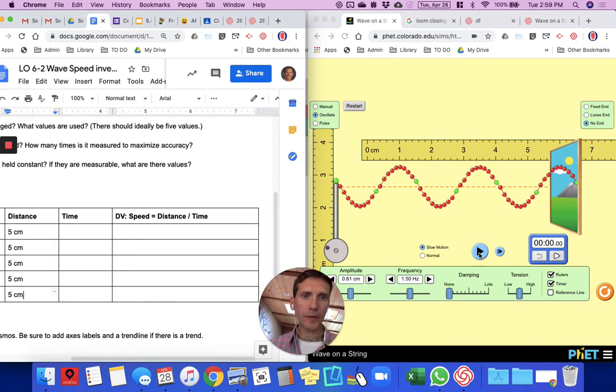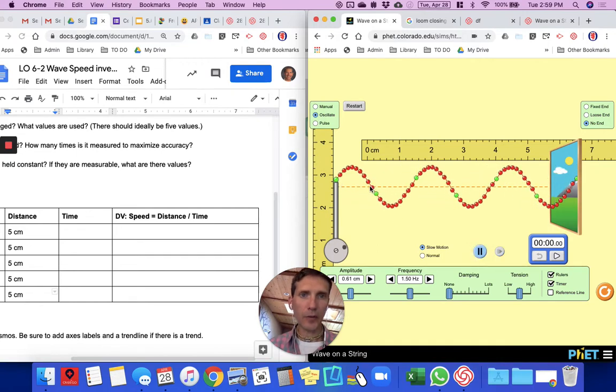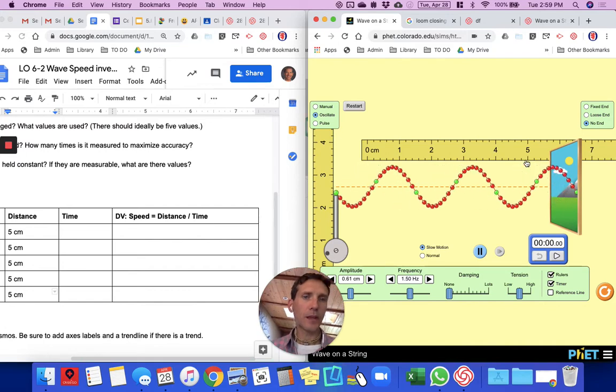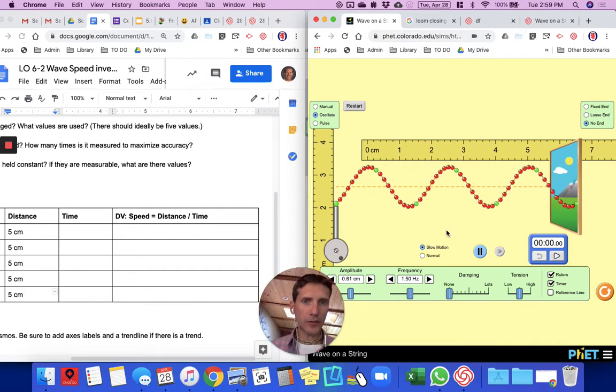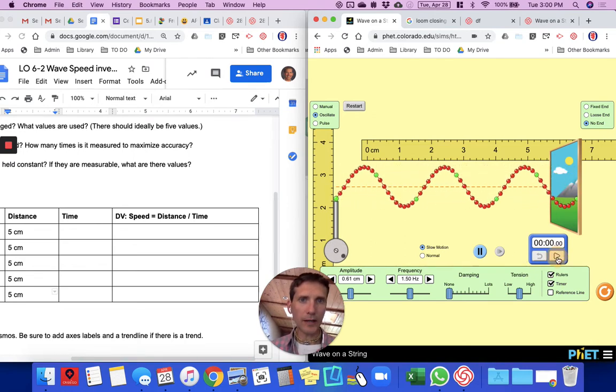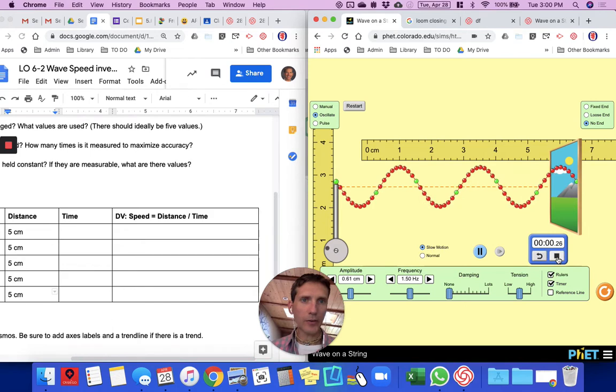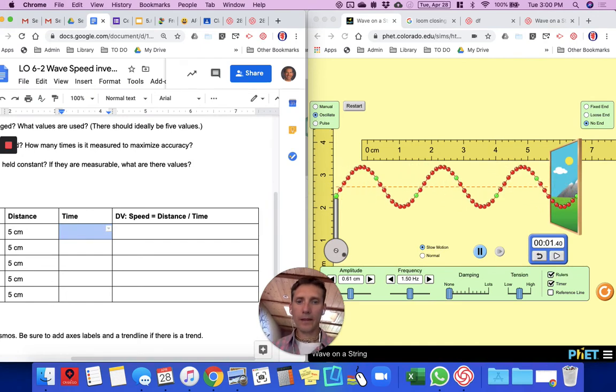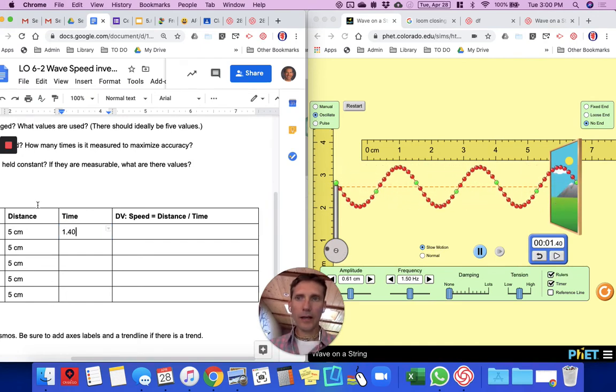Now for the time. I'll tell myself that I want to start the stopwatch when a crest reaches zero and stop it when it reaches five. I'm going to pick the next time it goes up, I'm going to start it. I'm going to wait until that crest gets all the way to the five, which is right now. Okay, so that was 1.40.